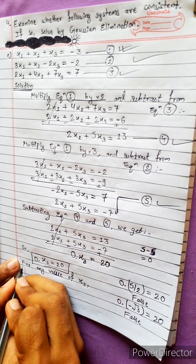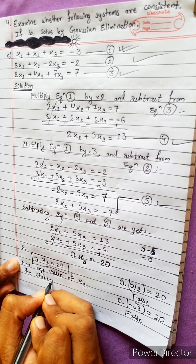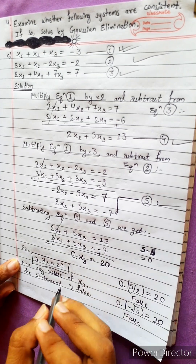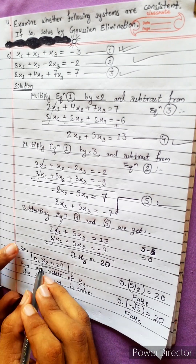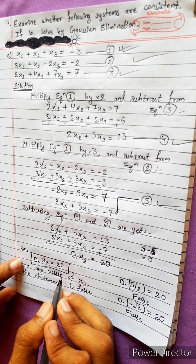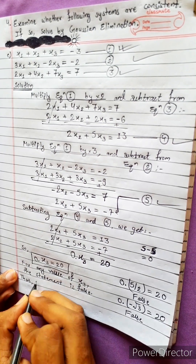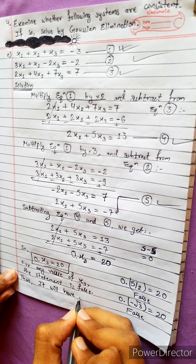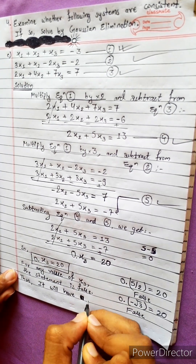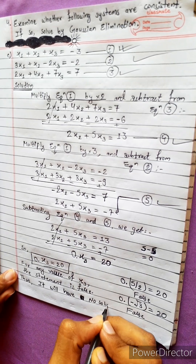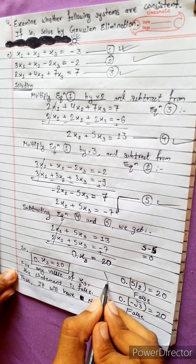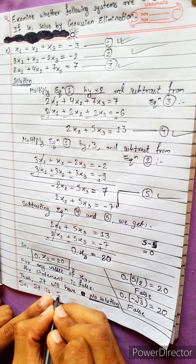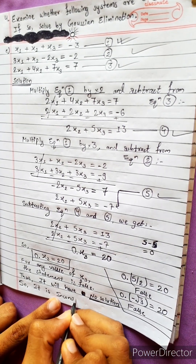This statement is false for any value of x3, so there is no solution. The system has no solution, meaning it is inconsistent.